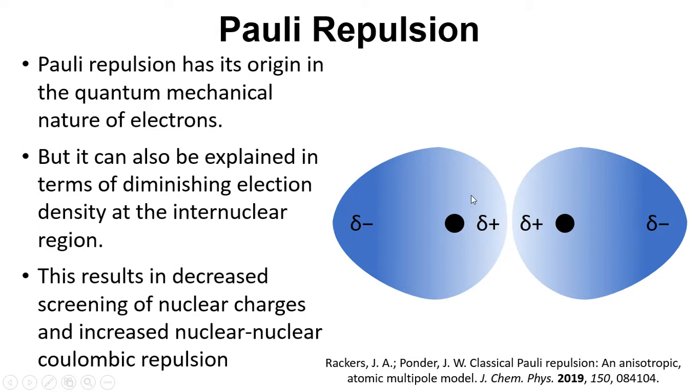then these positive charges on the nucleus here and the positive charge on this nucleus here, they're not shielded as much. We get reduced screening of those and so the positive charges start to repel each other. That's a more mechanistic understanding and description of the repulsion between non-polar molecules or atoms as they approach each other.